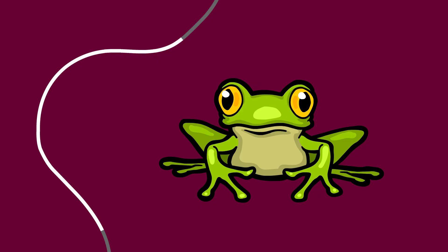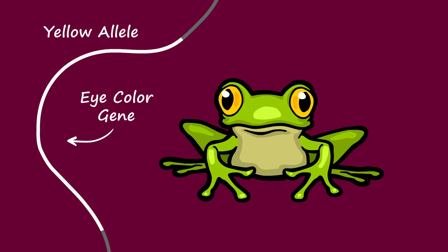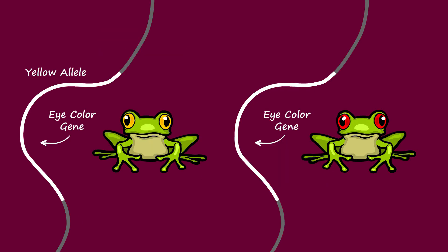Let's say there is a gene in a species of frog that codes for the frog's eye color — we'll call it the eye color gene. This frog has a version of the eye color gene, an allele of the eye color gene, that codes for yellow eyes. He has the yellow allele of the eye color gene. His buddy here has a different allele, a different version of the eye color gene — he has the red allele of the eye color gene.